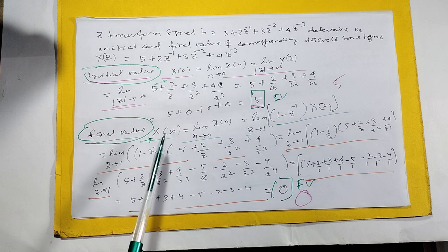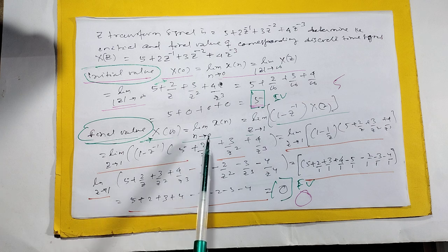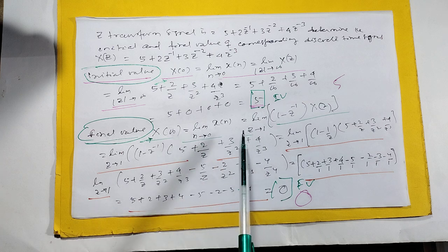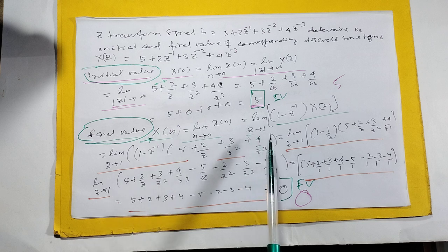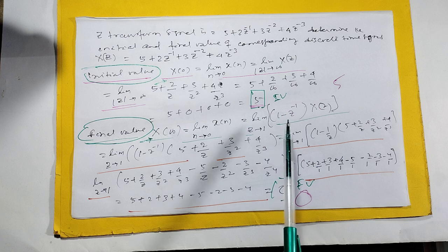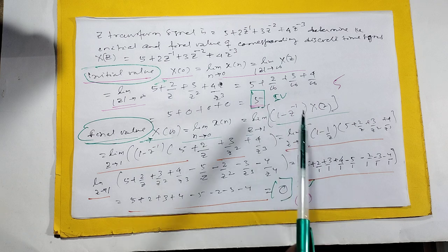Come to final value. X[∞] is equal to limit N tends to infinity of X[N]. In Z transform, this is the limit. This is the most important: limit Z tends to 1 of (1 - 1/Z) × X(Z). Both are under bracket.